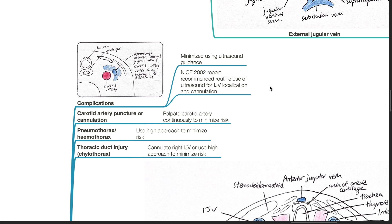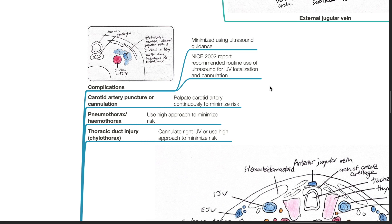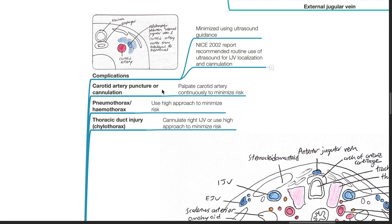Possible complications include carotid artery puncture or cannulation — palpate the carotid artery continuously to minimize risk, or use ultrasound. Pneumothorax or hemothorax — a high approach might minimize risk. Thoracic duct injury resulting in possible chylothorax.